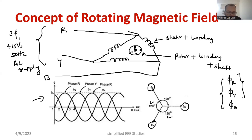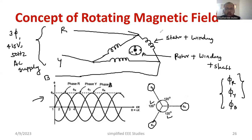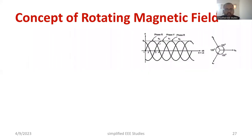You can mark phi R, phi Y, and phi B on the waveform — all are 120 degrees apart. Hope it's clear to everybody. Now I need to write the equations. First, let us write the equation corresponding to R — the flux corresponding to R.